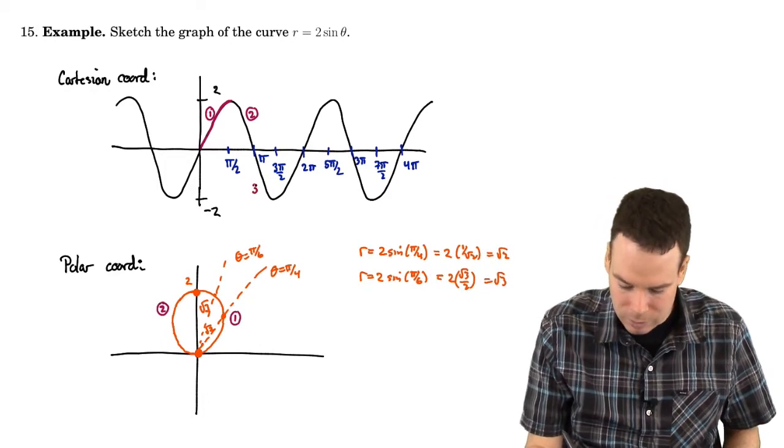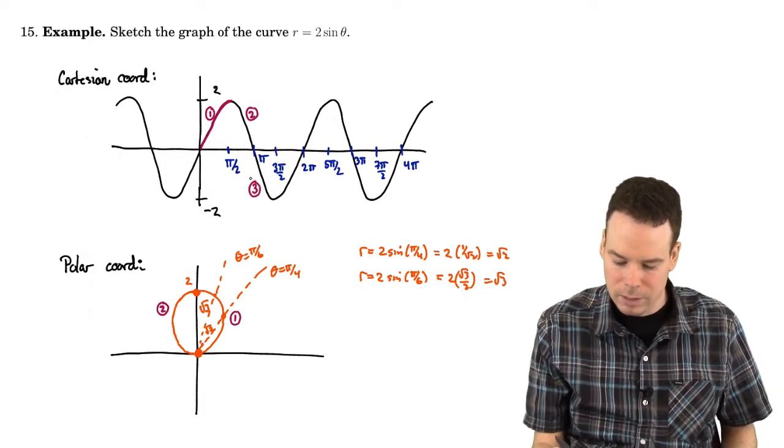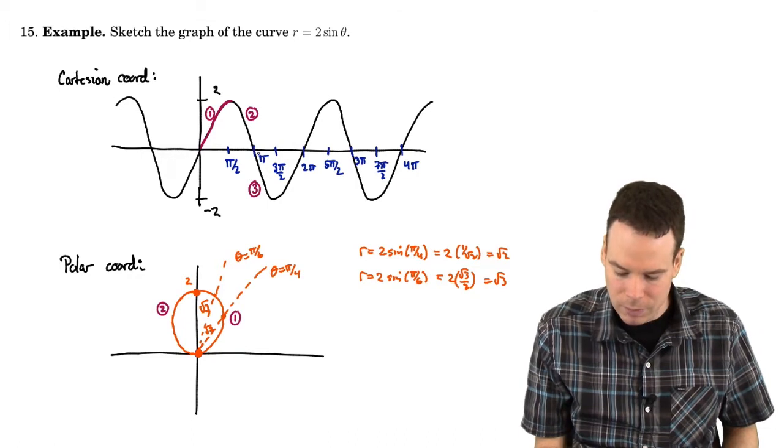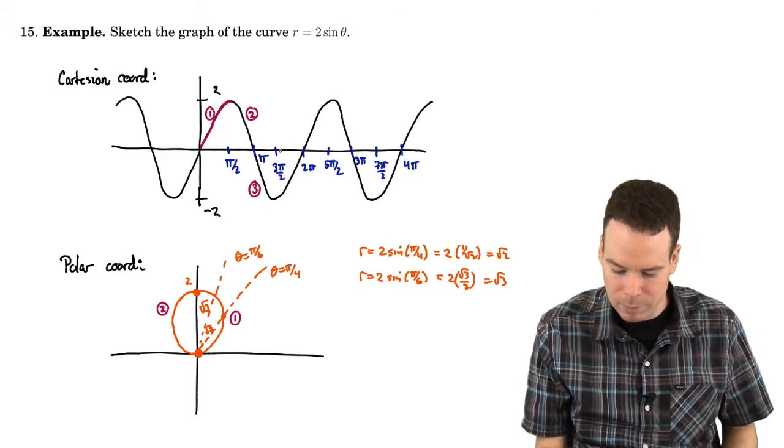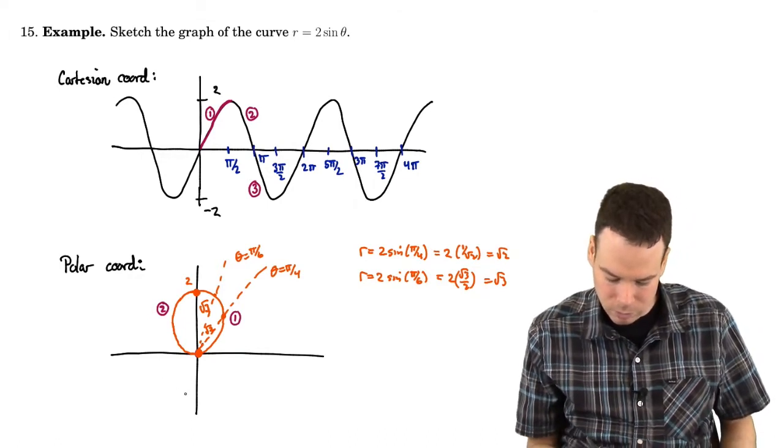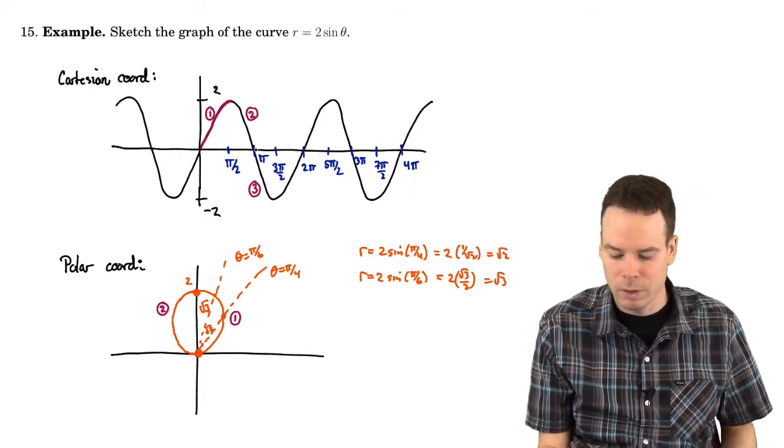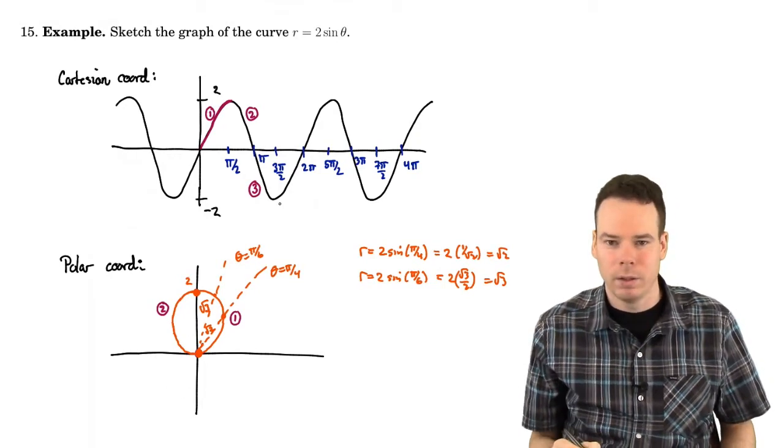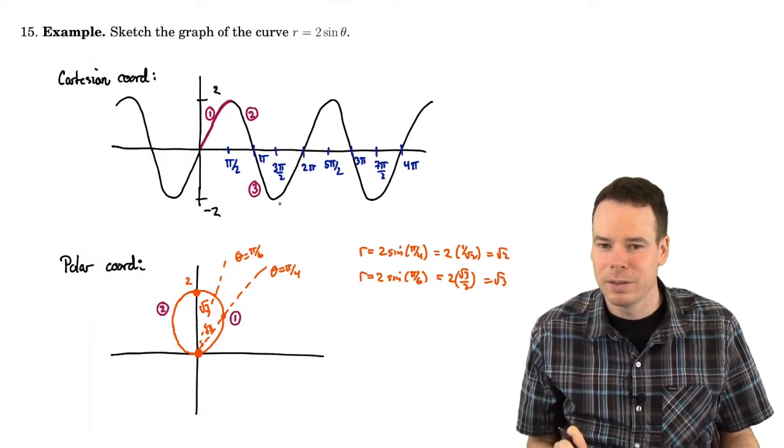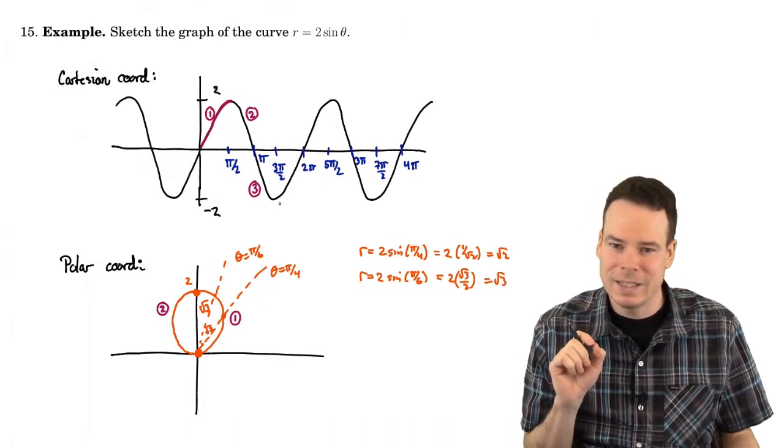So far so good. Now what about segment 3? Segment 3. As my theta value goes from pi to 3 pi by 2, as I trace out angles in this quadrant 3, my r value goes from 0 to negative 2. Ah, so here's where things get interesting. My r value is negative.